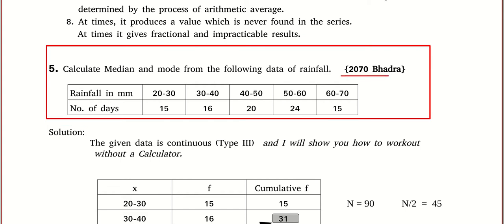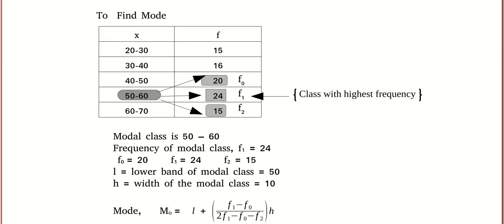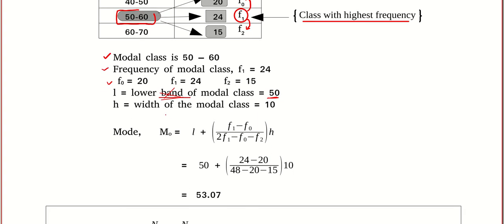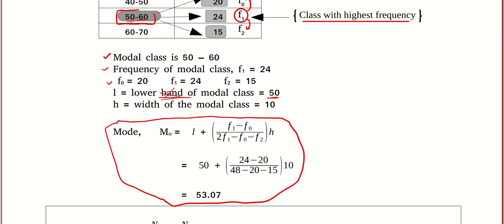I recommend you take a screenshot of this question from 2070 — I have seen it once or twice. To find the mode for grouped data, we find the modal class — the class with maximum frequency — calling that frequency f1, the frequency above it f-naught, and the frequency after it f2. These are explained along with the lower boundary of the modal class. Using the formula, the mode comes out much better than the approximated value of 55.